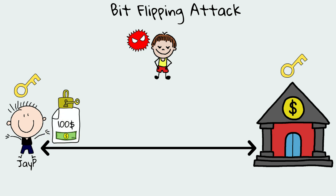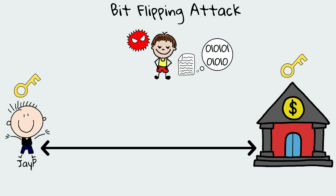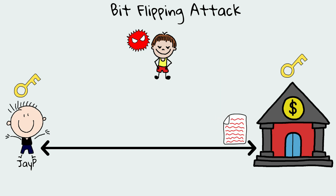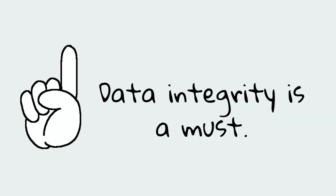Let's say JP is sending $100 to Joe. Chatty intercepts the message and, although he does not understand a thing, he flips some bits and transfers the message to the bank. When the bank decrypts the message, it may show as $1,000 instead of $100. That's why, in addition to encryption, we need to make sure the data has not been altered.